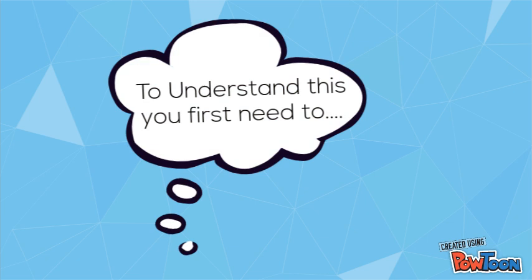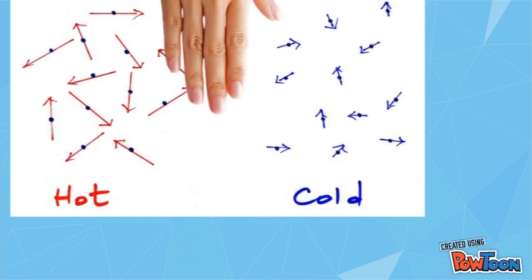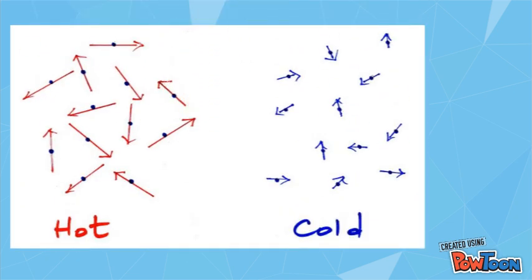To understand this, you first need to know how particles react in hot and cold temperatures. Hotter particles have a tendency to move faster, and colder particles move slower because they're losing their thermal energy.